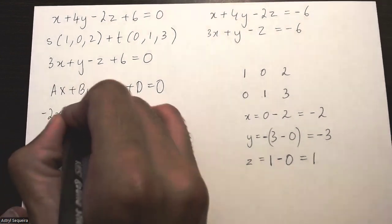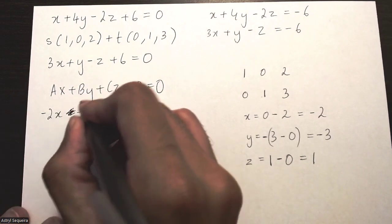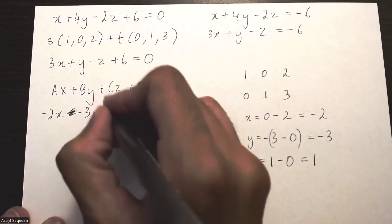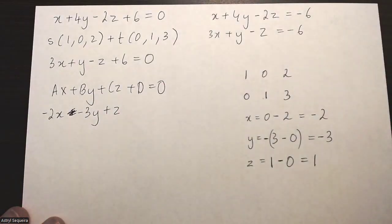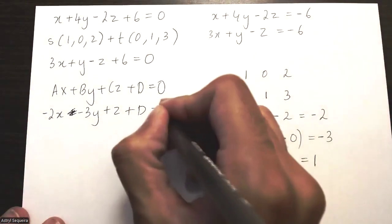So negative 2x minus 3y plus z, because c is just 1, plus d equals 0.